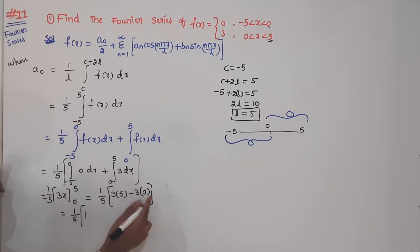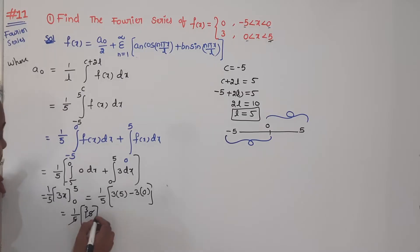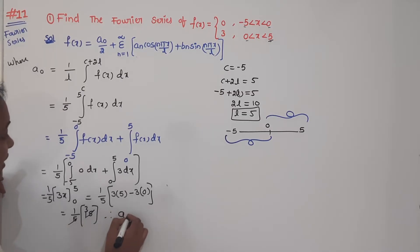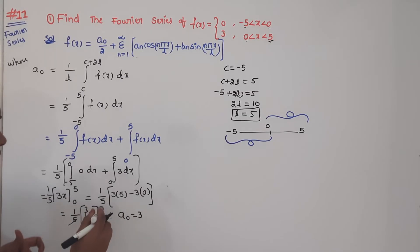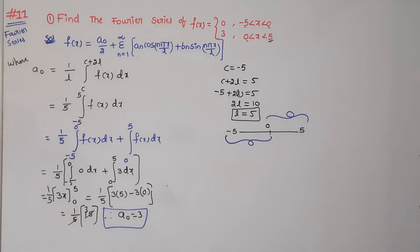Substituting the upper limit x = 5 gives 1 by 5 into 15, and the lower limit gives 0. Therefore A₀ = 1/5 × 15 = 3. So A₀ is equal to 3.